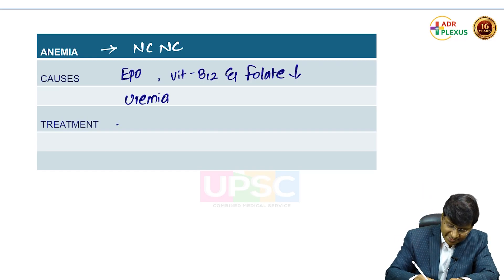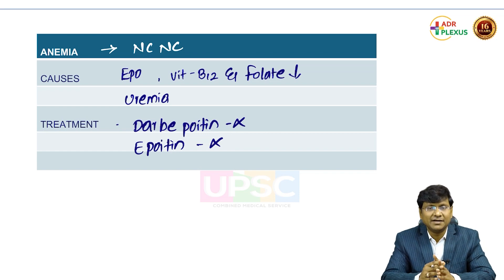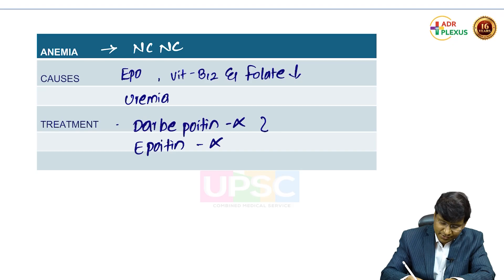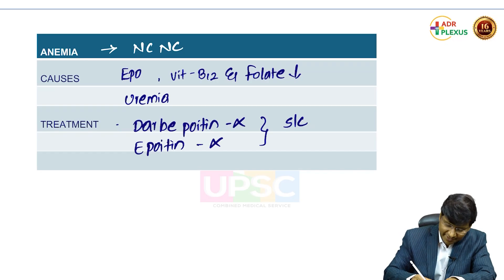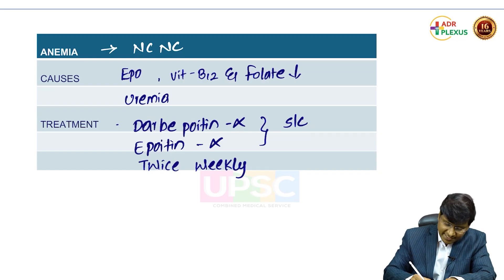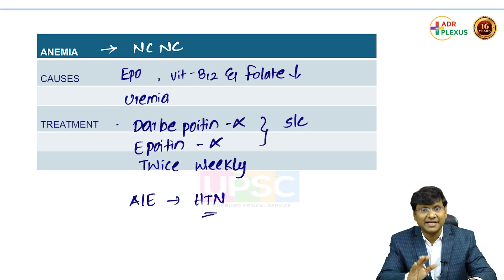For treatment, mainly due to erythropoietin deficiency, you need to give erythropoietin supplements. Examples are darbepoetin alpha and epoietin alpha — these are the two important erythropoietin formulations. The route of administration is subcutaneous, given twice weekly. The important adverse effect associated with erythropoietin supplementation is the development of hypertension.